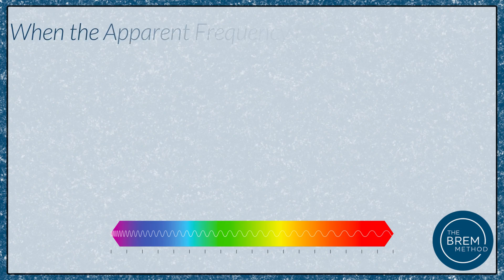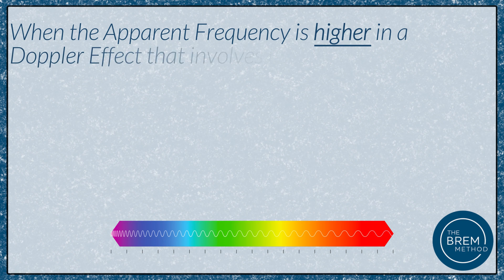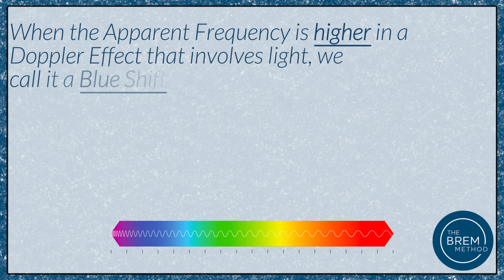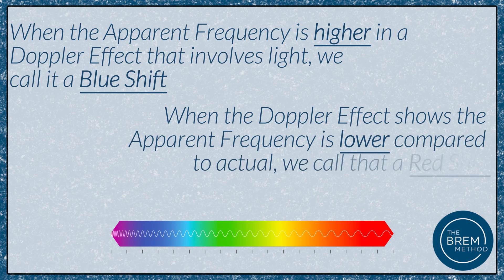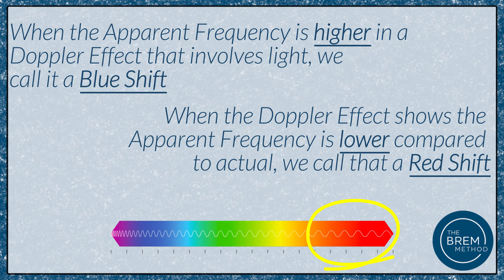Remember that Doppler effect can apply to light as well as sound. When the apparent frequency is higher in a Doppler effect involving light, we call this a blue shift because blue light has a higher frequency. When the apparent frequency is decreased compared to actual, we call that a red shift because red light has a lower frequency. Doppler effect or Doppler shift only happens when the source and the receiver are moving towards or away from each other.